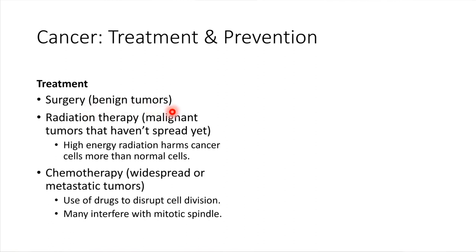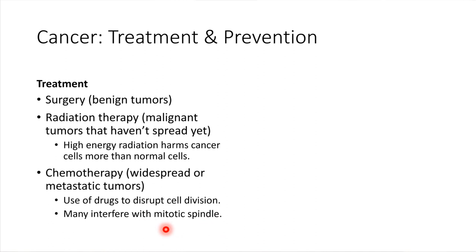If the tumor is malignant and has the potential to spread but hasn't actually spread yet, then radiation therapy would be an option — using high energy radiation to damage and kill off the cancerous cells. This is very targeted to one specific area of the body. If the cancer is widespread or metastatic — spread throughout the body — then chemotherapy might be the best treatment option. Chemotherapy involves taking drugs which spread throughout the whole body and disrupt cell division. A lot of chemotherapy drugs prevent the mitotic spindle from forming, so the chromosomes are not allowed to sort like they normally would during cell division.